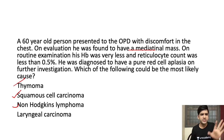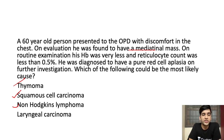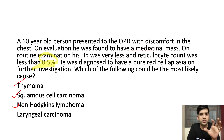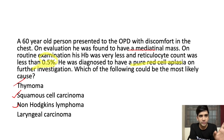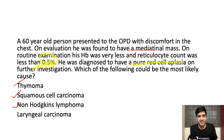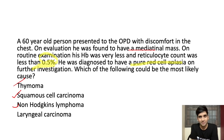These three — thymoma, squamous cell carcinoma, and non-Hodgkin's lymphoma — are still possible with a mediastinal mass in a 60-year-old. On routine examination, hemoglobin was very low. Reticulocyte count was 0.5%, which is very important. The normal reticulocyte count is around 1.5%; if it is less than 0.5%, it means the erythroid lineage is not working. Hemoglobin is low and the rest is normal. The question also states he was diagnosed with pure red cell aplasia. Since pure red cell aplasia is not directly caused by the tumor mass itself, I am going to call it a paraneoplastic syndrome.